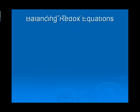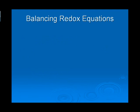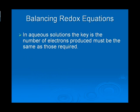Now, in balancing redox reactions, the key is the number of electrons produced must be the same as the number of electrons actually reacted. So for reactions in acidic solution, it's really kind of an eight-step procedure.